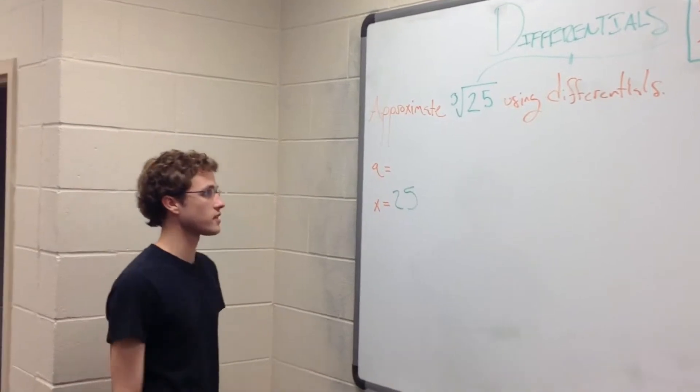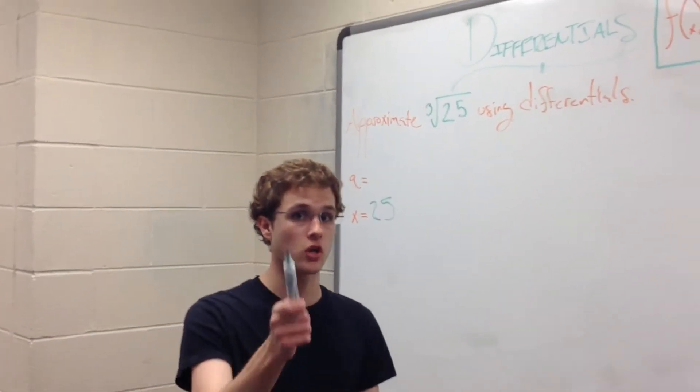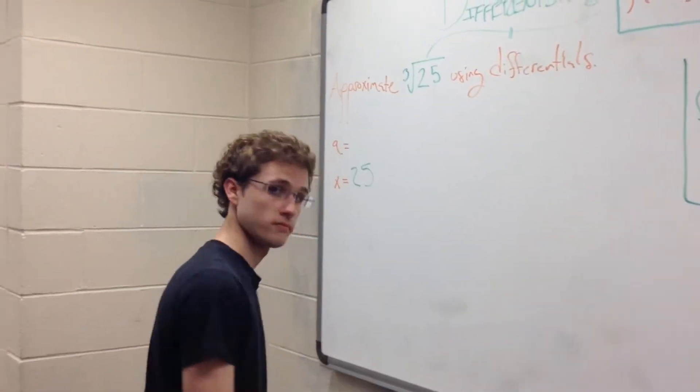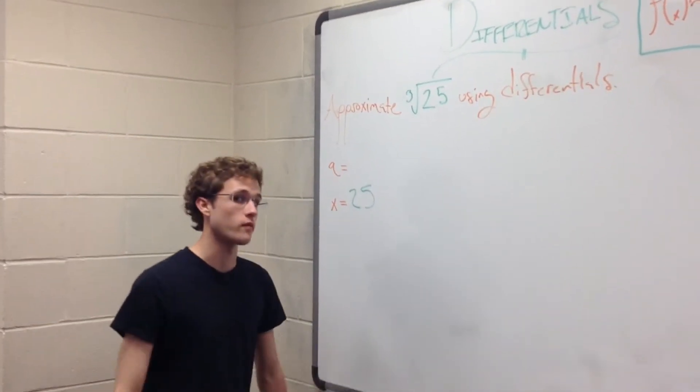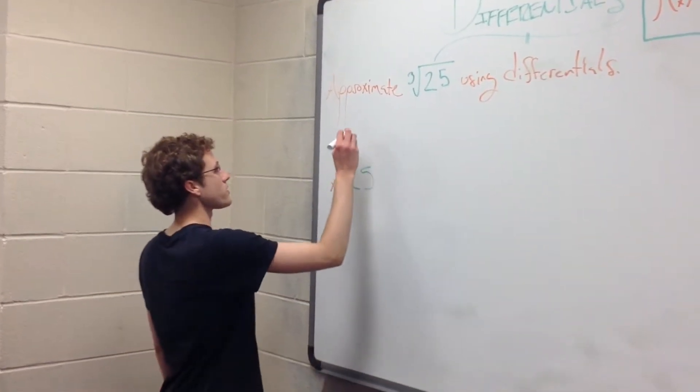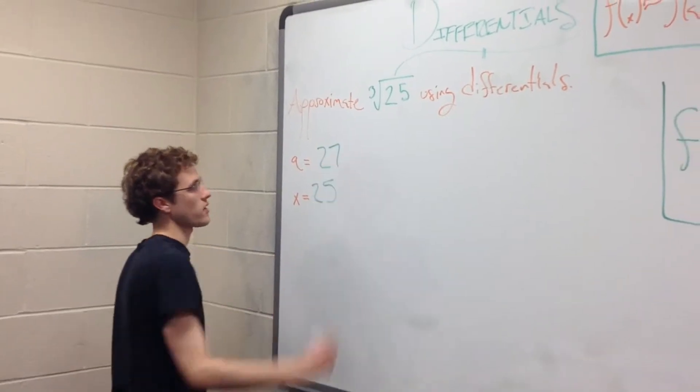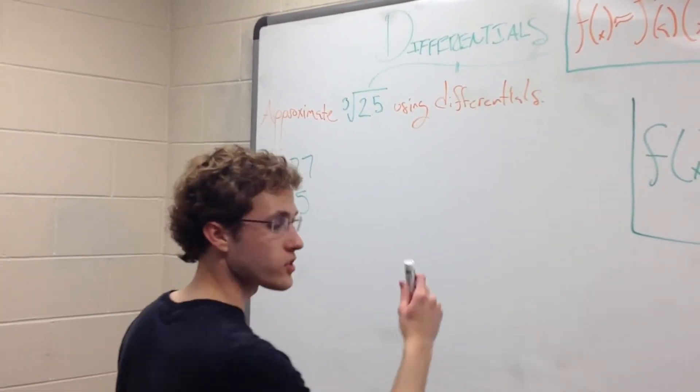So f of x equals the cube root of x. Our a value is going to be something that is easy to take the cube root of. Our x value is just 25. So what's something that's really easy to take the cube root of that is close to 25? Well, 27 sounds pretty good because the cube root of 27 is just 3. So let's say a equals 27.